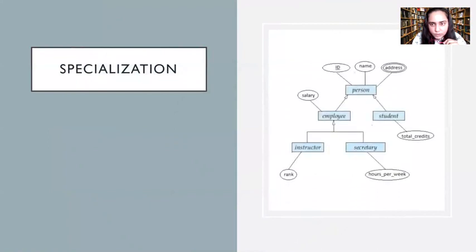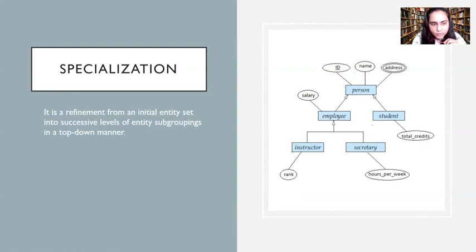Specialization looks like this diagrammatically. It is a refinement from an initial entity set into successive levels of entity subgroupings in a top-down manner. So what that means is you start with a person and then you realize that person contains so many attributes, and we are trying to create a database for a university.